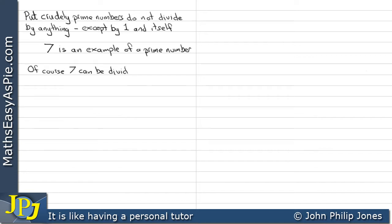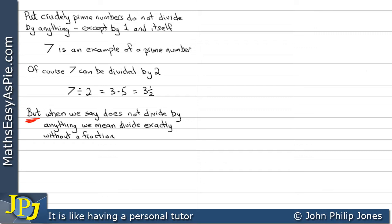Of course 7 can be divided by 2 to give 3 and a half. But when we say does not divide by anything, we mean divide exactly without a fraction in the answer. So nothing divides exactly into 7 except 1 and 7, where 7 is itself.